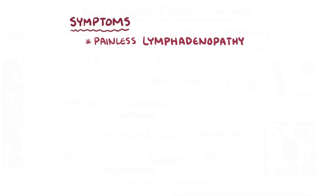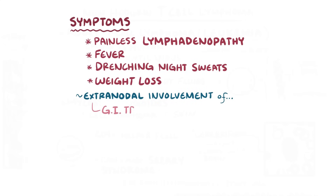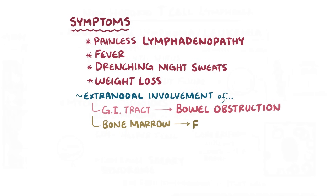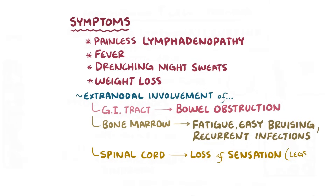For symptoms, individuals with non-Hodgkin lymphoma usually develop painless lymphadenopathy. The release of cytokines also causes fever, drenching night sweats, and weight loss. Extranodal involvement of the gastrointestinal tract can cause bowel obstruction. Involvement of the bone marrow can cause fatigue, easy bruising, or recurrent infections. And extranodal involvement of the spinal cord can cause weakness and loss of sensation, usually in the legs.